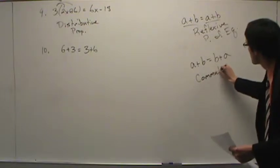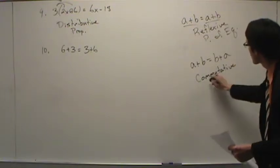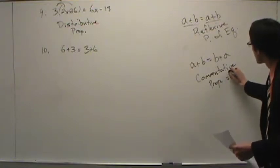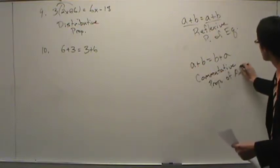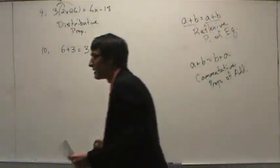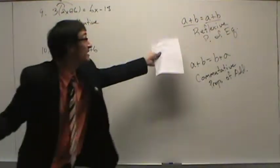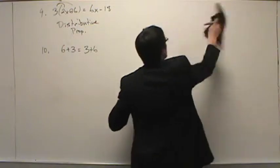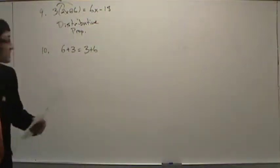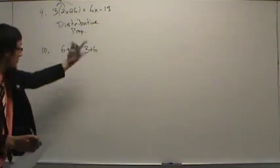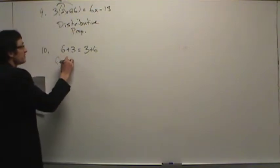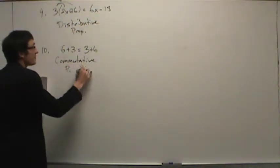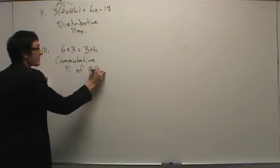So commutative property of what? What's the operation? Addition. So back to number ten: six, three becomes three, six — the numbers change location. This is the commutative property of addition.